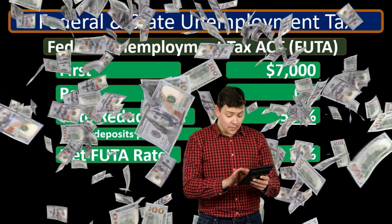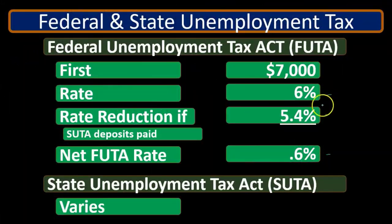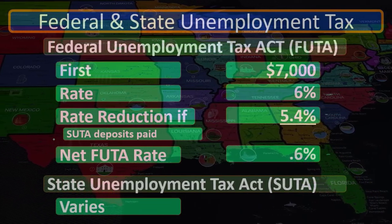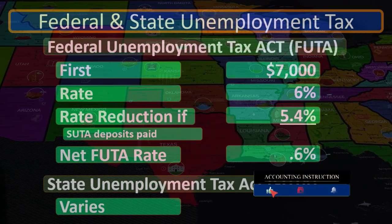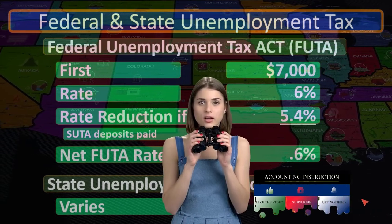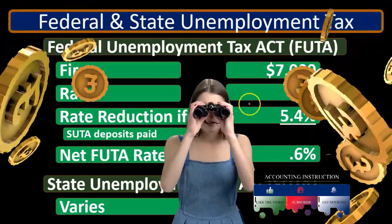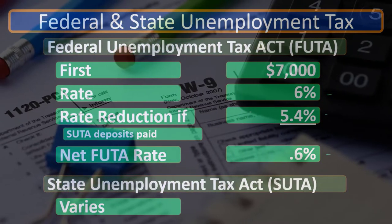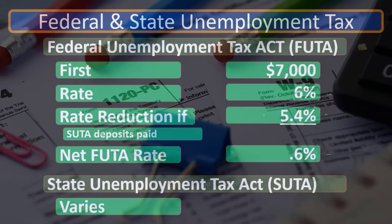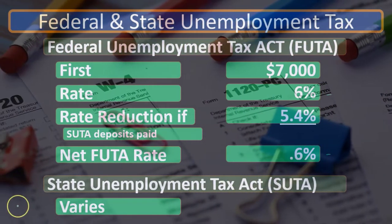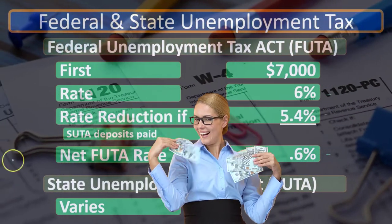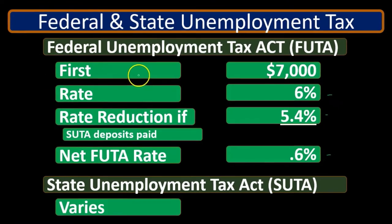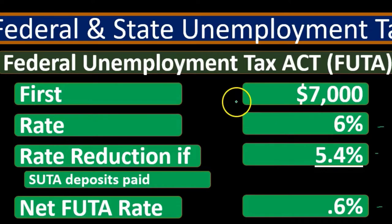FUTA is an employer tax not deducted from employee paychecks. The State Unemployment Tax Act (SUTA) varies by state, but all states typically implement some form of state unemployment tax that meets the minimum requirements to qualify for the 5.4% federal credit. States prefer to collect the 5.4% themselves rather than have the federal government take the full six percent, so they generally comply with FUTA requirements.